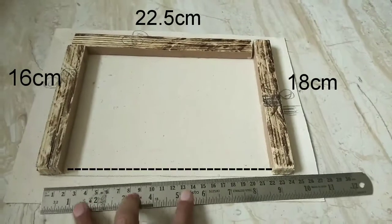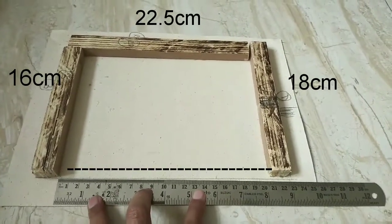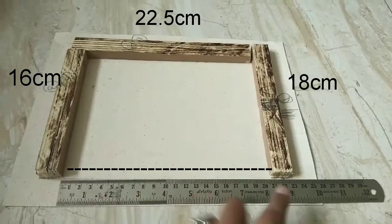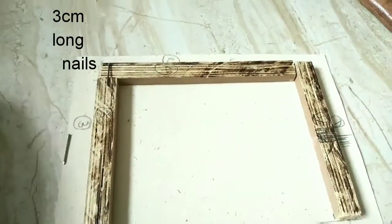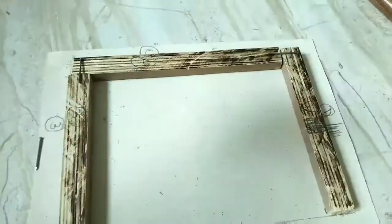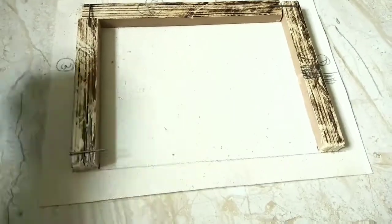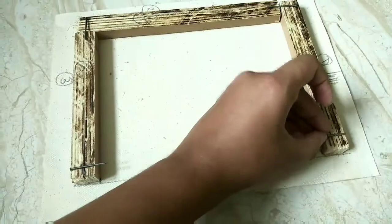Now measure this leftover. I have taken three centimeter long nails. Make sure that when you hammer the nails, the nail should come across the second wood. As you can see, I am placing these.